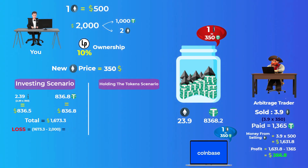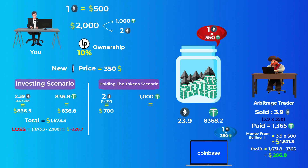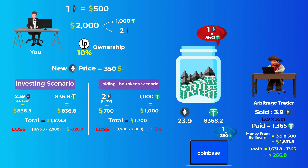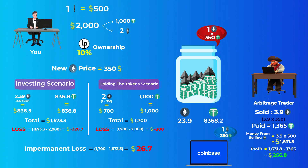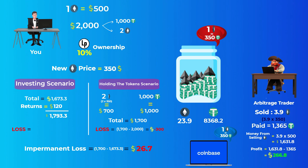To calculate your impermanent loss, let's see what could have happened if you held your tokens. You would still have the 1,000 Tether plus 2 Ethereum worth $700 at the new price, totaling $1,700 — still a loss of $300. But you lost an additional $26.7 by investing in the pool, which is your impermanent loss. Still, if you earned the same $120 in returns from the pool, you'd have $1,793.3 total, meaning investing in the pool reduced your loss by $93.